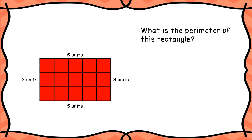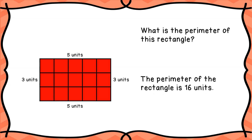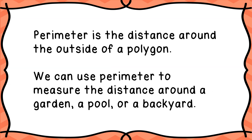Just some reminders before we go: perimeter is the distance around the outside of a polygon — you don't count the inside, only the outside, like you were putting a fence around something. We can use perimeter to measure the distance around a garden, a pool, or a backyard — pretty much anything you could walk around. This has been how to measure perimeter. I hope it's been helpful and good luck on your activities.